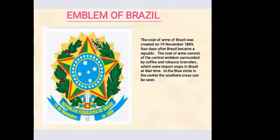We also studied the emblem of Brazil. The coat of arms of Brazil was created on 19 November 1889, four days after Brazil became a republic. It consists of a central emblem surrounded by coffee and tobacco branches, which were the important crops in Brazil at that time. In the blue circle at the center, the Southern Cross can be seen.